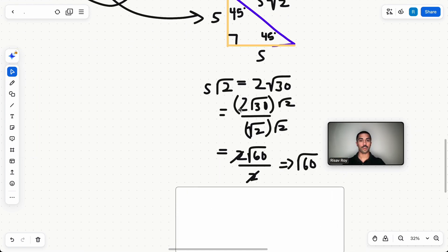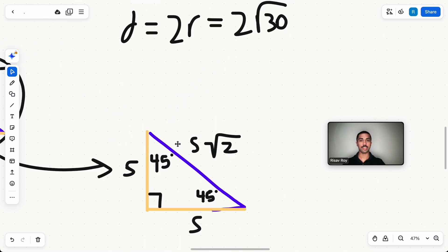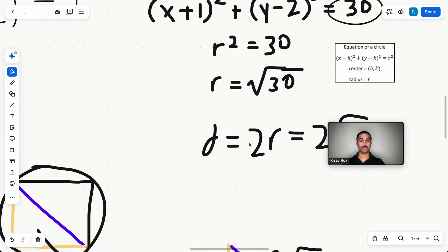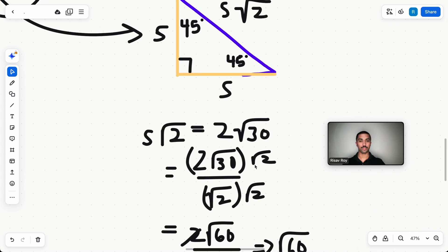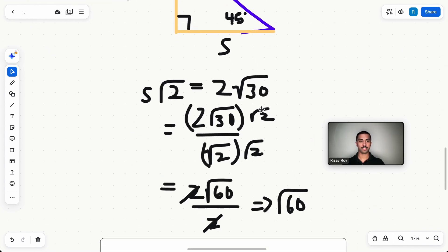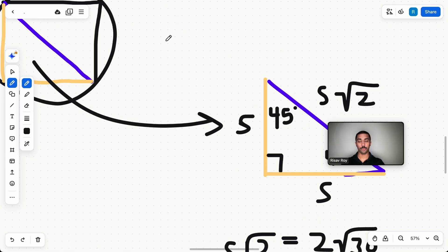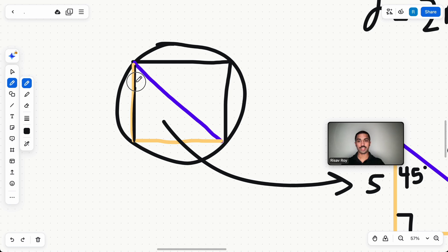So we just solve for s by setting the diagonal s√2 equal to what we found as the diagonal, which is 2√30, which is divide by √2 on both sides, and then multiply the √2s out of the denominator to get it on the numerator. And what we'll get is the square root of 60. This, what we just found, the square root of 60, is one side of this square.